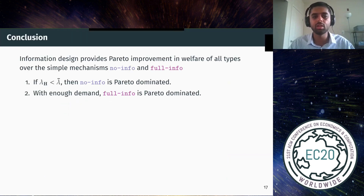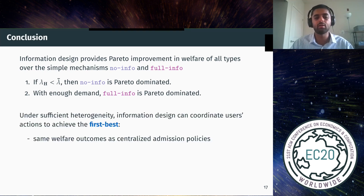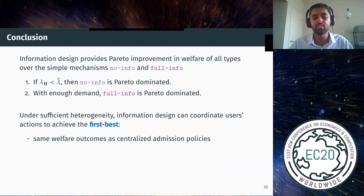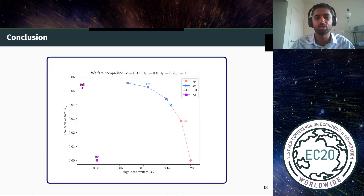To conclude: we observe that information design provides a significant Pareto improvement over simple information sharing mechanisms like no information and full information, under reasonable assumptions that hold in practice. Also, with sufficient heterogeneity, information design can coordinate users' actions to achieve the first best — the same welfare outcomes as centralized admission policies. Overall, we conclude that information design can be a valuable tool to improve access to these essential services for disadvantaged users. Thank you.